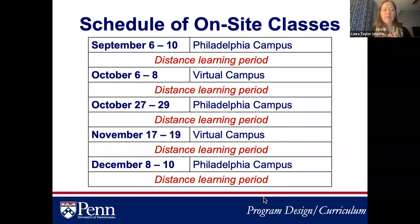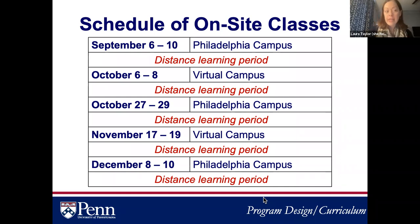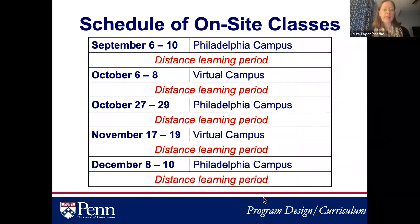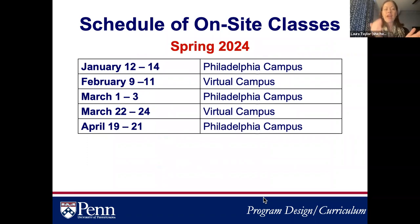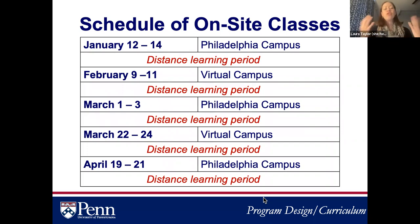In the fall semester, there are five on-sites. On-sites one, three, and five will be on Philadelphia's campus, while two and four will be on our virtual campus. Between each on-site, you will have a distance learning period using Canvas. In the spring, the same structure applies — five on-sites, with one, three, and five on campus and two and four virtual. If an on-site is offered in person, you are expected to attend in person; you cannot attend it virtually.